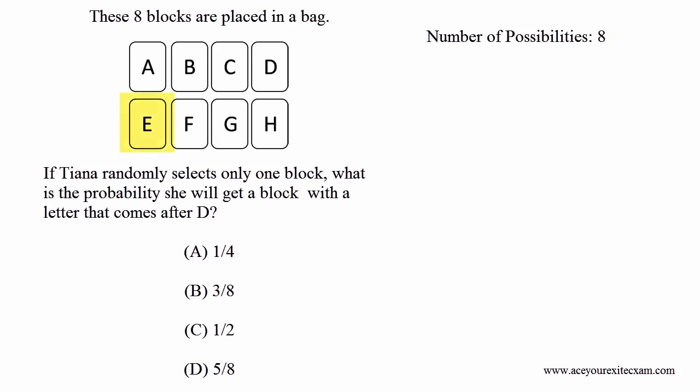Well, the first letter that comes after D is E. So E is 1, then we have F, F is 2, next we have G, G makes 3, and finally we have H, which gives us four possible options.